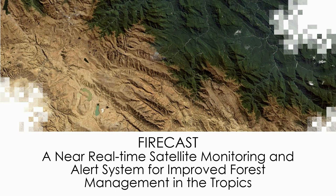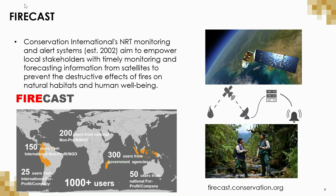The first system is Conservation International's own system called Firecast — a near real-time satellite monitoring and alert system specifically designed to improve forest management in the tropics. CI developed this system in the early 2000s to empower local stakeholders with timely monitoring information from satellites in order to prevent the destructive effects of fires on natural habitats and human well-being. Firecast now operates strategically in seven countries.